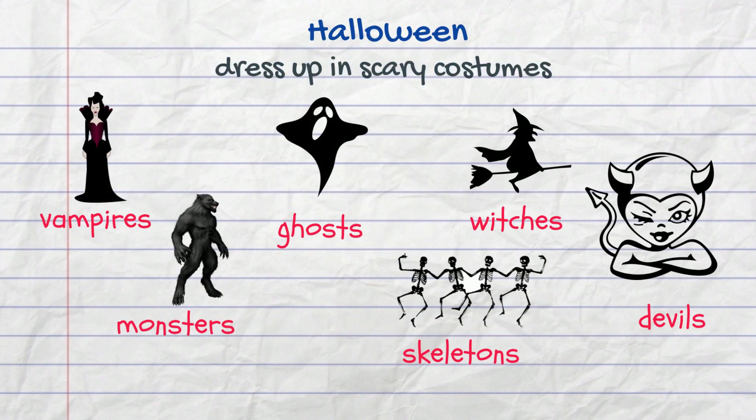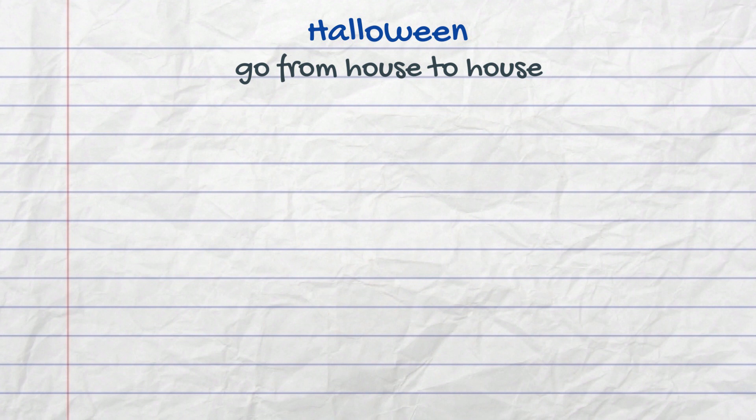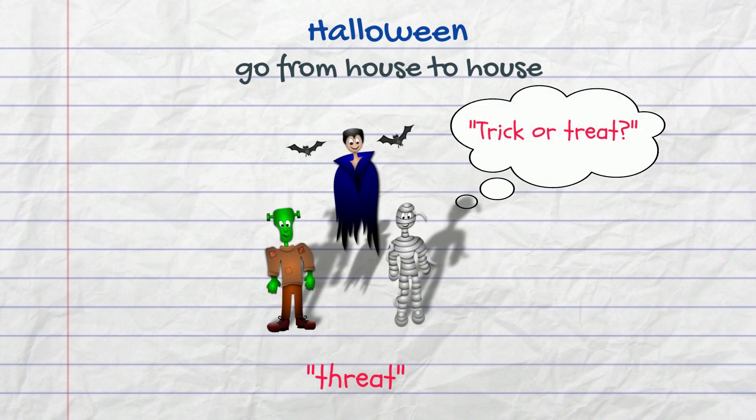On October 31st, a lot of people in the world celebrate Halloween. On this day children dress up in scary costumes of vampires, monsters, ghosts, skeletons, witches and devils and go from house to house, asking for treats such as candy or sometimes money, with the question 'trick or treat.' The word trick in this case means a threat to perform mischief on the homeowners or their property if no treat is given.